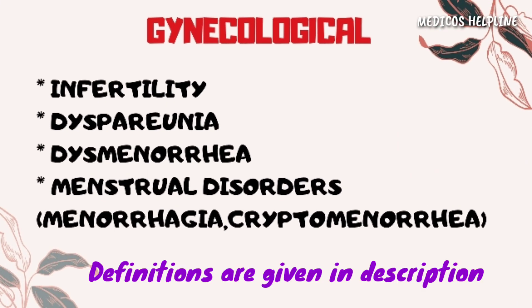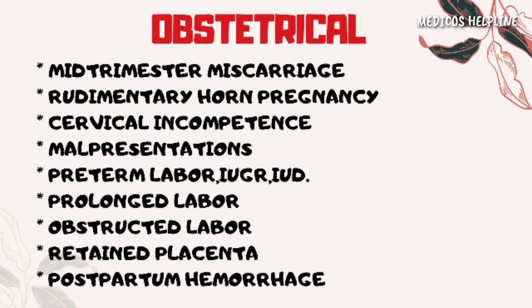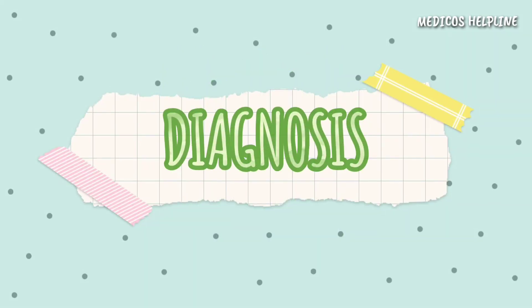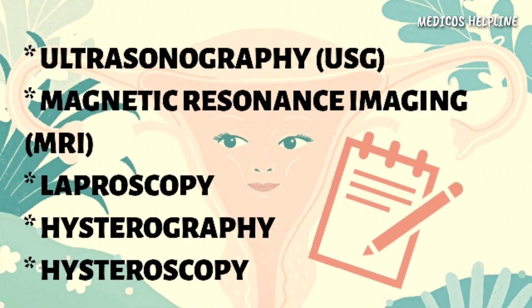Very often uterine anomalies present with infertility, dyspareunia, dysmenorrhea, and menstrual disorders like menorrhagia and cryptomenorrhea. On the obstetrical level, mid-trimester miscarriages, rudimentary horn pregnancy, cervical incompetence, malpresentations, pre-term delivery, intrauterine growth retardation, intrauterine fetal death, prolonged labor, obstructed labor, retained placenta, and postpartum hemorrhages are very common.